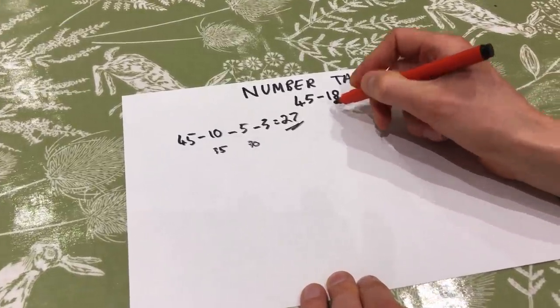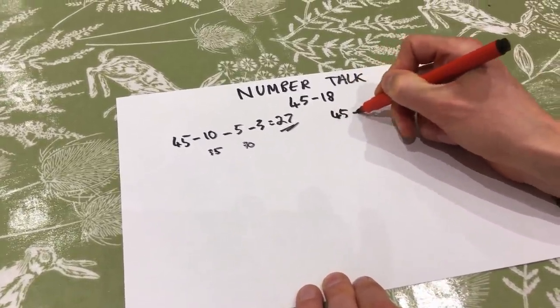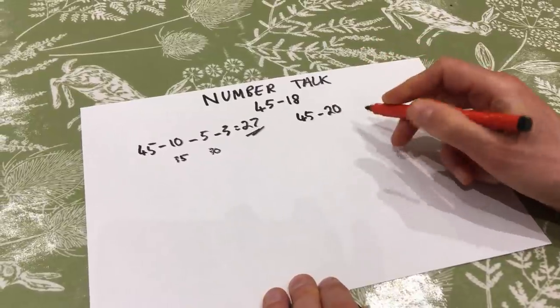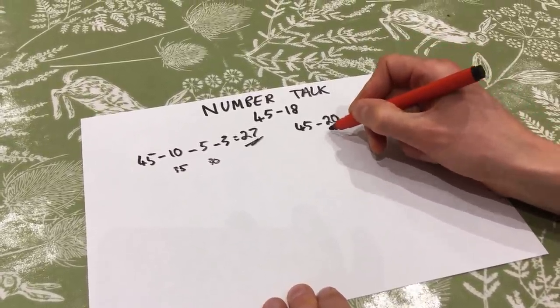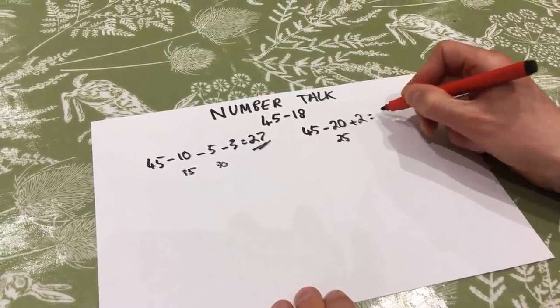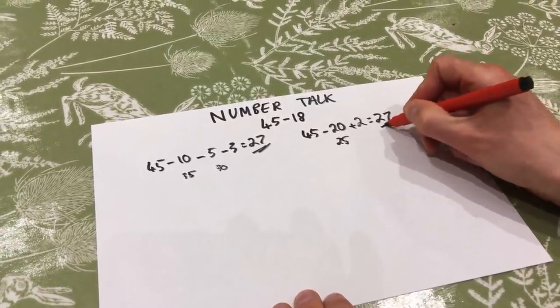Another child said, well, I did something different. I did 45 and then I just subtracted 20. I took away too many. In fact, I took away two too many. So that got me to 25, and when I add those two back on, that gets me to 27 as well.